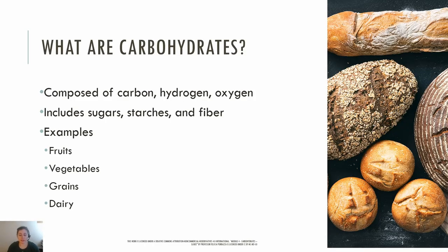Carbohydrates are composed of carbon, hydrogen, and oxygen. They include sugars, starches, and fiber. Some foods that contain carbohydrates are fruits, vegetables — in higher amounts in starchy vegetables like peas — grains, and dairy.